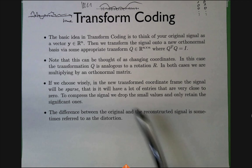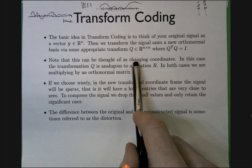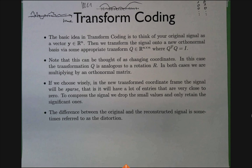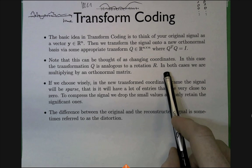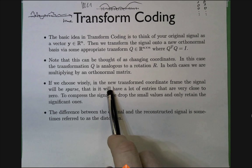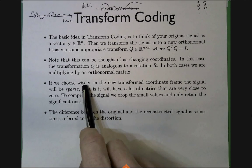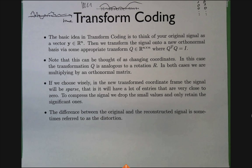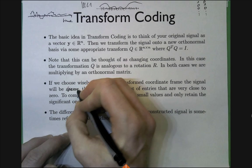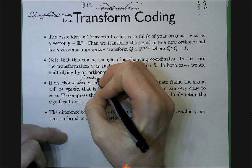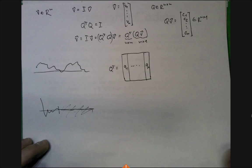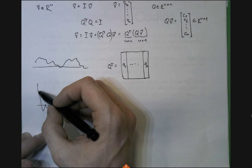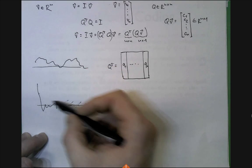Summarizing: the orthonormal matrix can be interpreted as a change of coordinates — basically a rotation, possibly a reflection. If we choose the orthonormal matrix Q wisely, then the transform coordinates will be localized — you won't get perfectly zeros but something very small. The high-magnitude coefficients will be orders of magnitude bigger than the later ones.